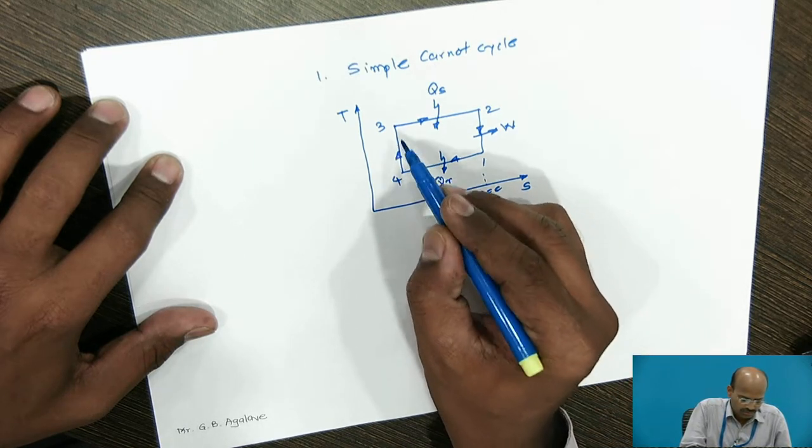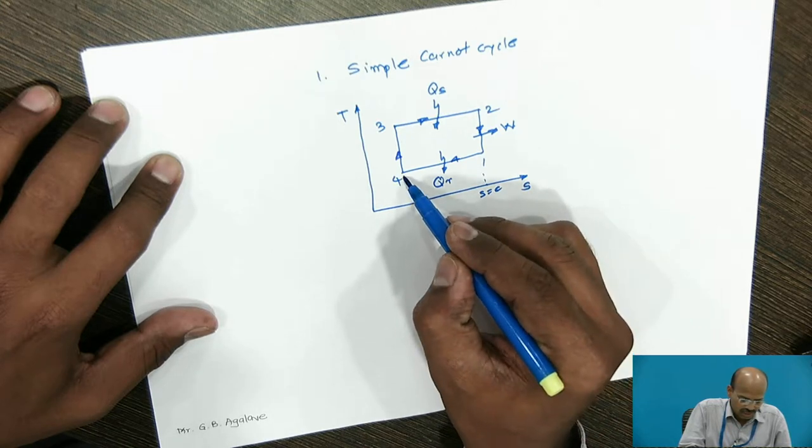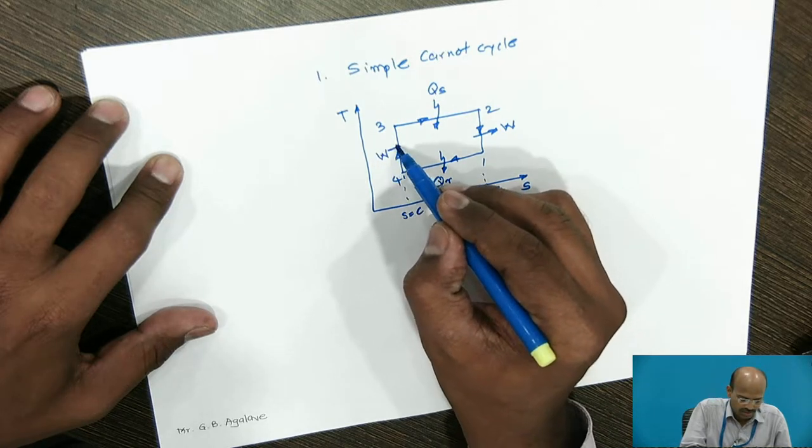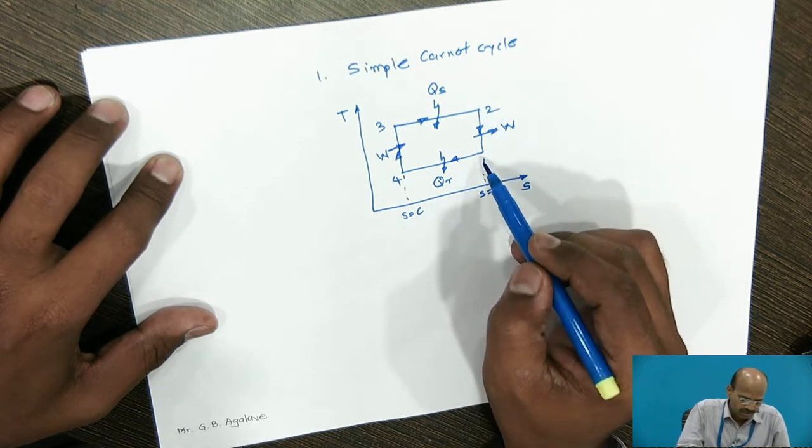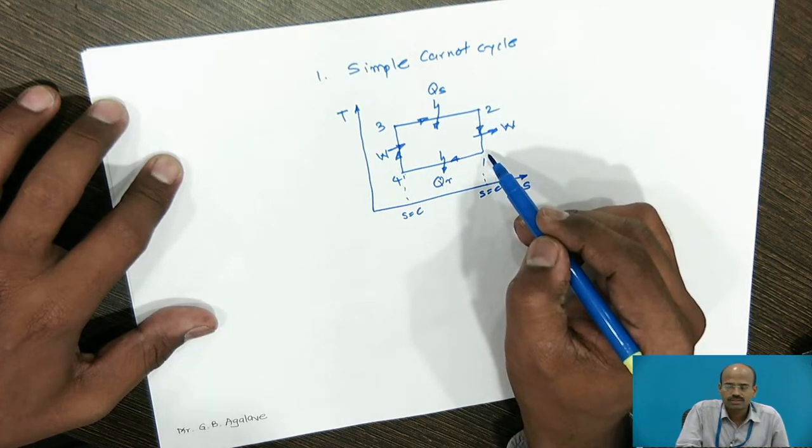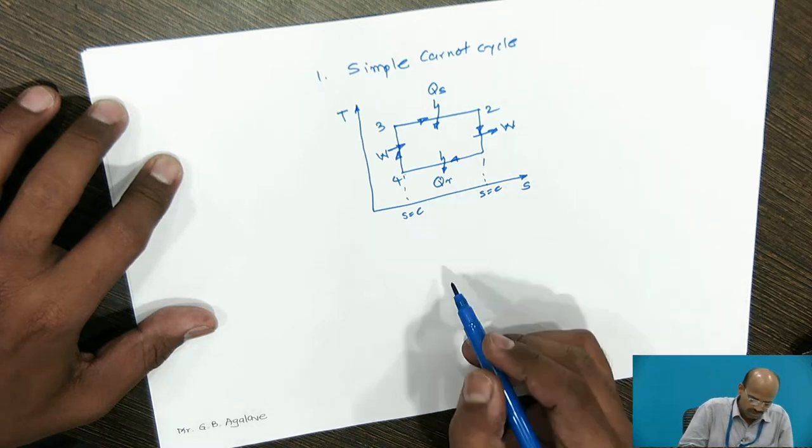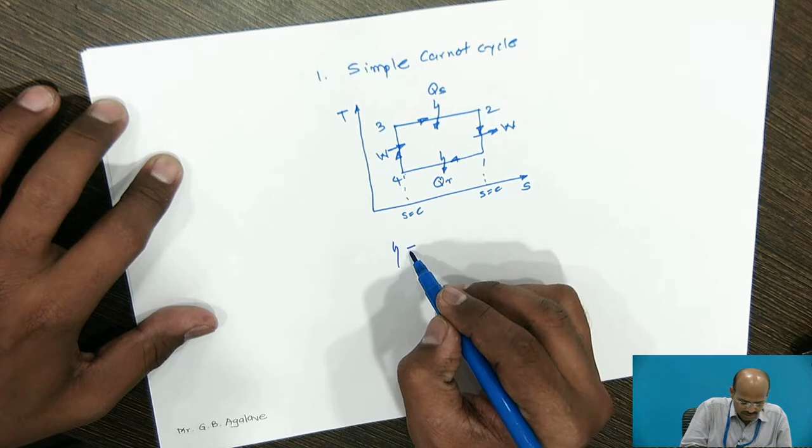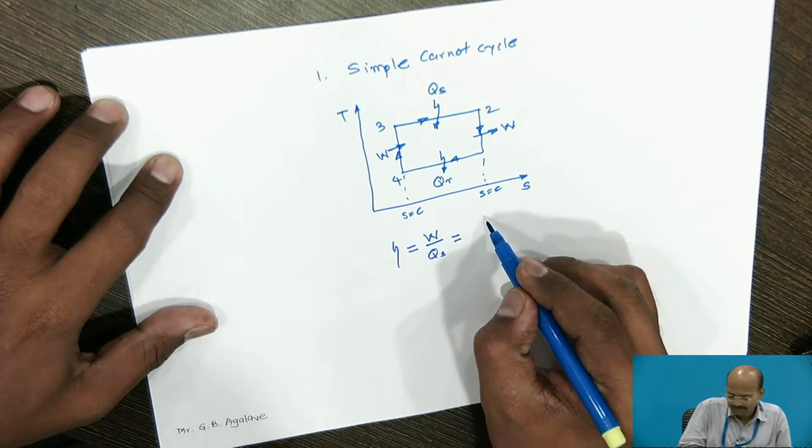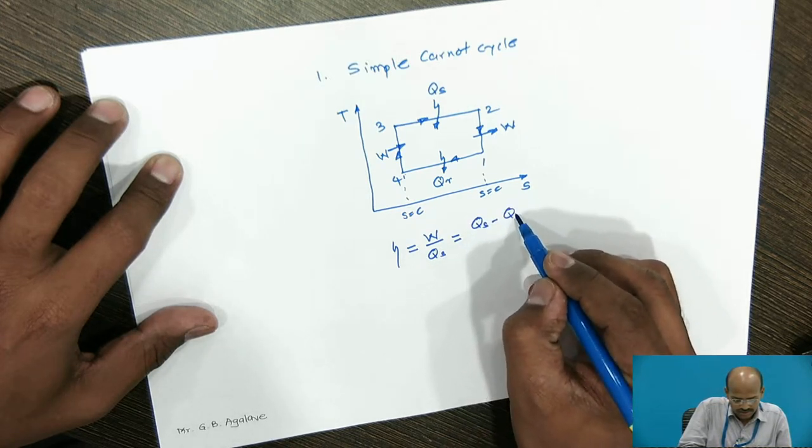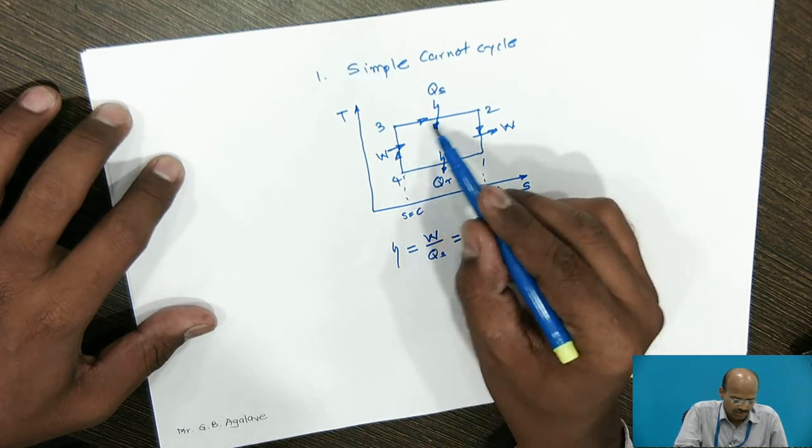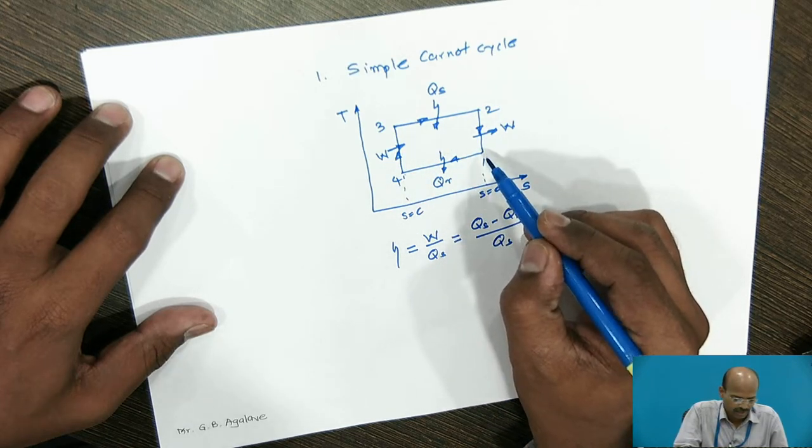Then, process 4 to 3 is once again the isentropic process. The isentropic process, entropy is constant and work required to be done on the system. So, the cycle 1, 4, 3, 2, 1 is simple Carnot cycle. We have derived the efficiency for the simple Carnot cycle as output to the input, that is heat supplied. The output can be written as heat supplied minus heat rejected divided by heat supplied. Though the numbers are not in flow with the clockwise direction of the cycle, as this is simple Carnot cycle.